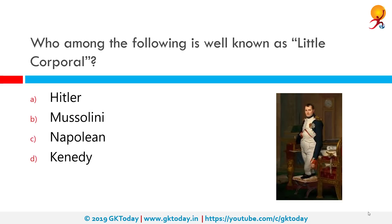Who among the following is well known as the Little Corporal? The correct answer is Napoleon. Napoleon Bonaparte was a French statesman and military leader who rose to prominence during the French Revolution and led several successful campaigns during the French Revolutionary Wars. He was Emperor of the French as Napoleon I from 1804 to 1814, and again briefly in 1815 during the Hundred Days.